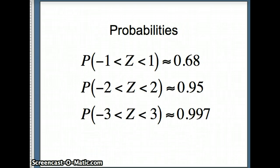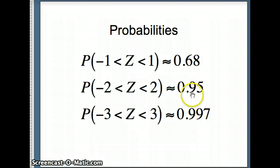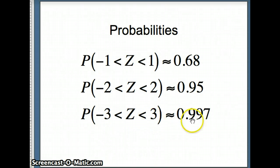Here's how we write these probabilities. The probability Z is between negative one and one — within one standard deviation of the mean — will be about 68%. The probability Z is between negative two and two is about 95%. And the probability Z is between negative three and three is about 99.7% of the data.